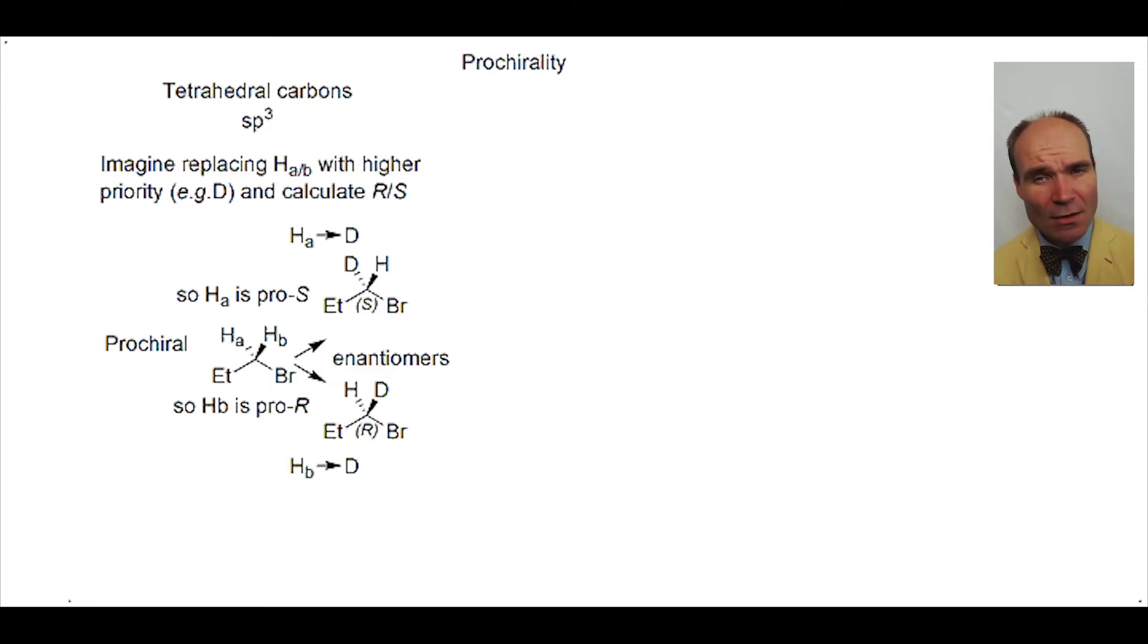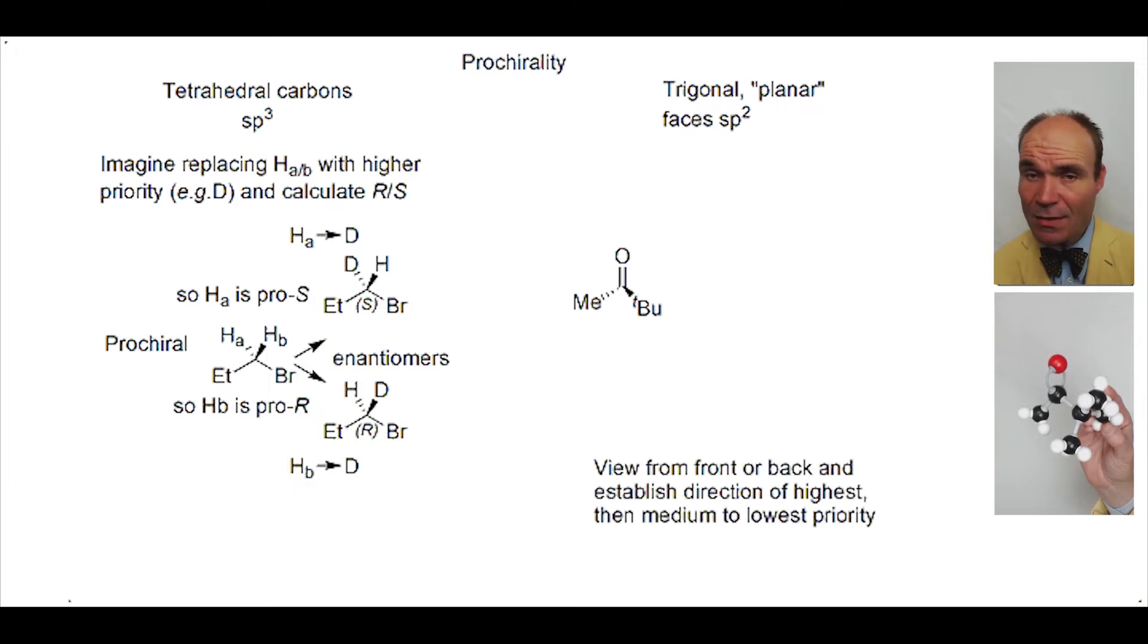How about an sp2 trigonal planar structure? This ketone has two key faces. We will view it from the front and the back, ascribe priorities and observe the direction going from the highest to ultimately the lowest.